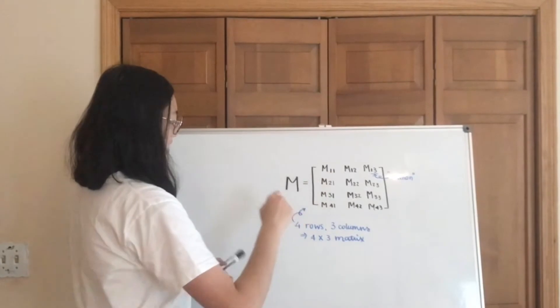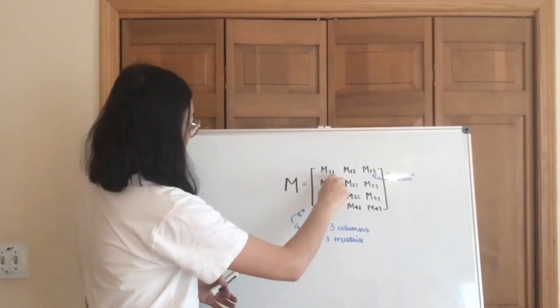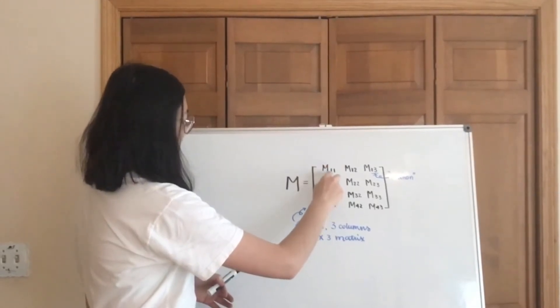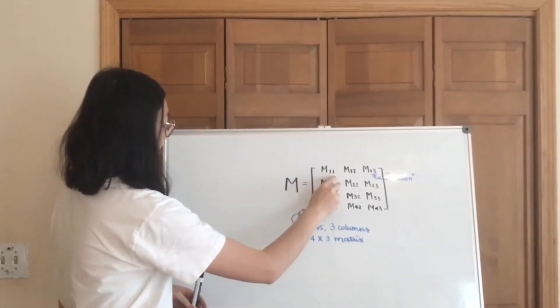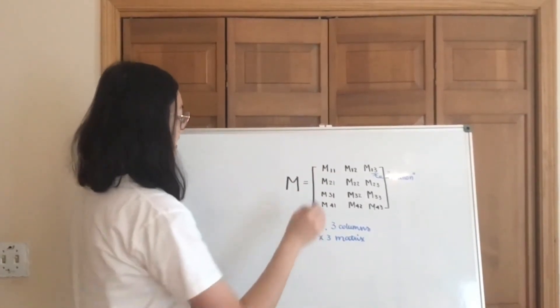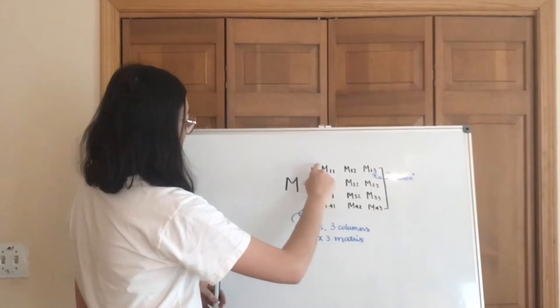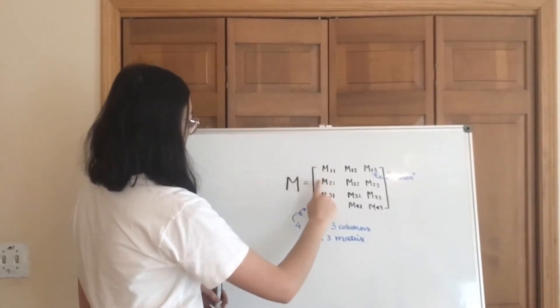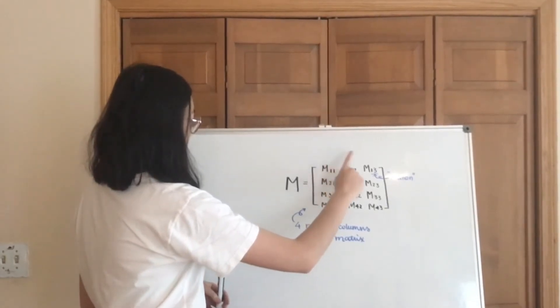The first number indicates which column it's in, and then the second number— no I'm sorry, the first number indicates the row it's in, and then the second number indicates the column that it's in. So for example, here, this number will be in the second row, we count 1, 2, second row, and also in the second column, 1, 2.